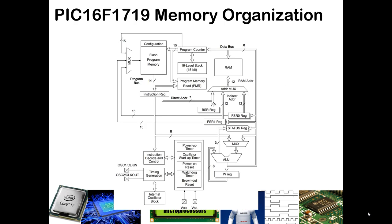The basic organization — we have seen this diagram before — but I want to focus on the flash program memory, which is where your code is stored, and the RAM, which is where variables are stored. Your flash program memory has words that are 14 bits wide, and you have 15 bits used as the program counter to go from line to line as you go through the various programs. When you call a subroutine, the stack is used, and it holds 15 bits — the same size as the program counter.